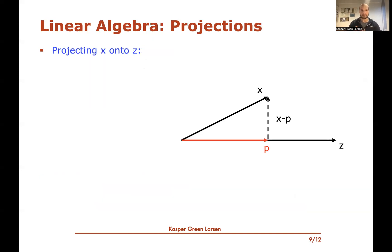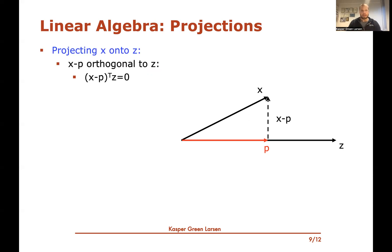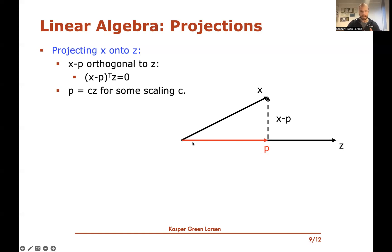Linear algebra recap: let's say I have a vector x and I want to project it onto a vector z, computing the orthogonal projection p of x onto z. To compute p, we have two observations: first, x minus p must be orthogonal to z, meaning the inner product of (x minus p) with z equals zero. Second, p must be some linear scaling of z — there's some scalar c such that p equals c times z.